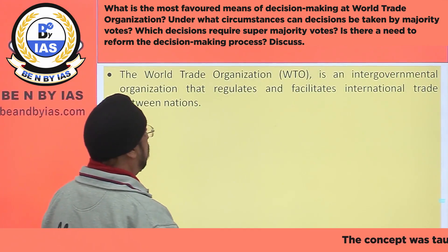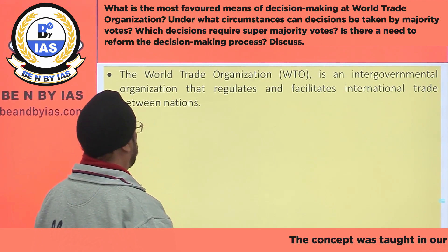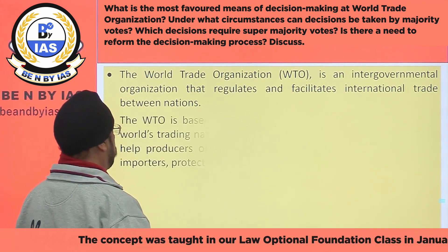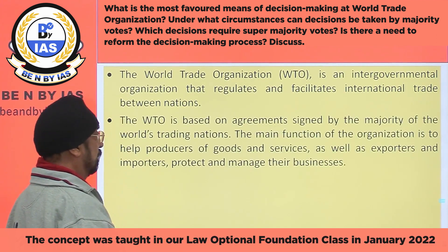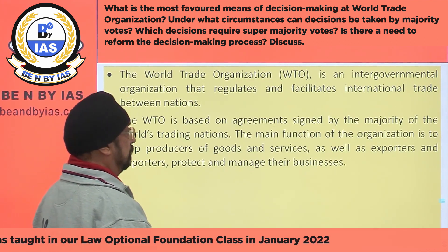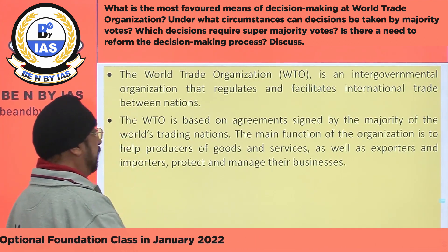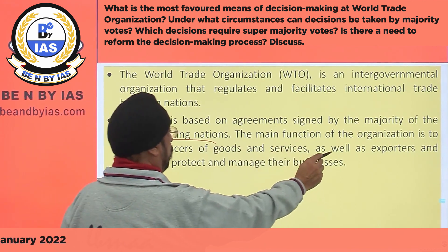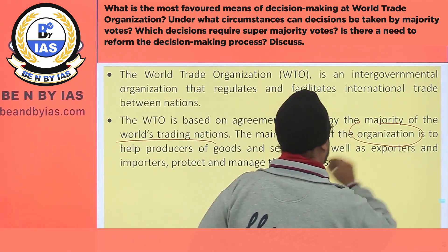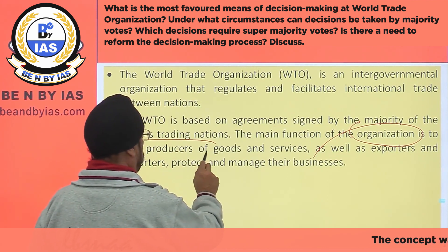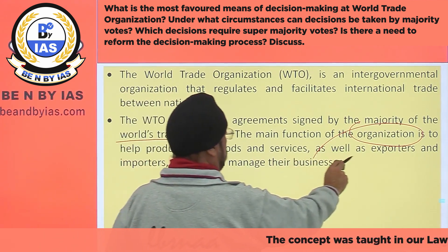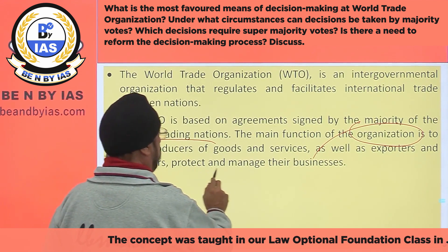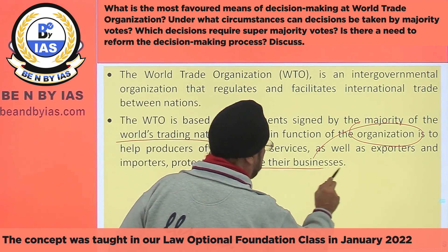WTO is an intergovernmental organization that regulates and facilitates international trade between nations based on agreements signed by the majority of the world's trading nations. The main function of the organization is to help producers of goods and services, as well as exporters and importers, protect and manage their businesses.